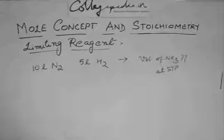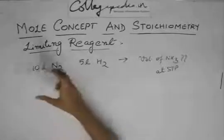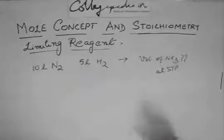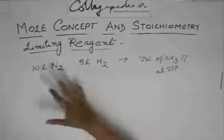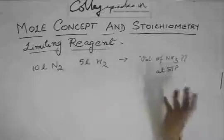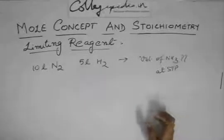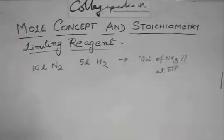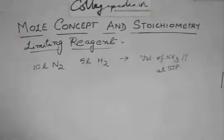10 liter at STP reacts with 5 liter at STP to form NH3. Although it does not take place at STP, we have just said that the volume which was taken was at STP. And then whatever the reaction was done, was done at the reaction temperature.